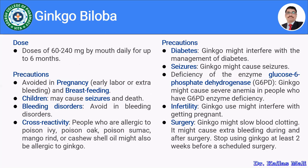Precautions and warnings for ginkgo biloba: first, it should be avoided in pregnancy and breastfeeding. In pregnancy, there might be chances of early labor or excessive bleeding. It should also be avoided in breastfeeding as there is not enough safety information. In children, consuming ginkgo biloba products may cause seizures. It should be avoided in bleeding disorders, as the condition may worsen.